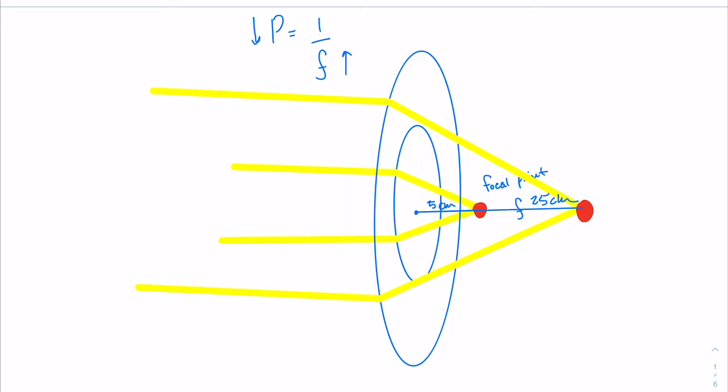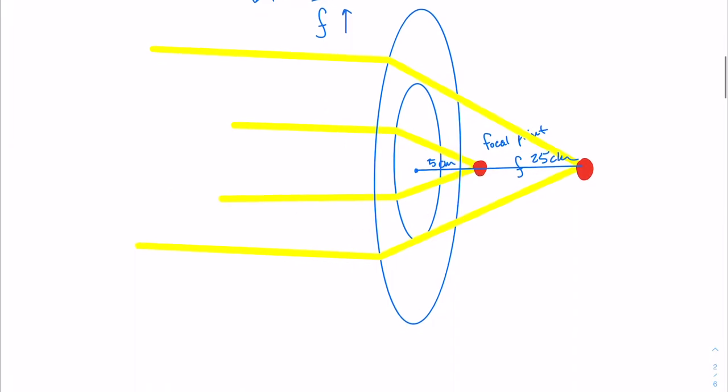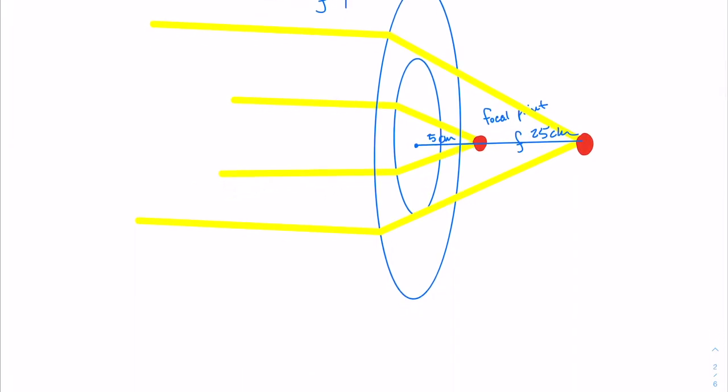Vice versa, if we plug in five centimeters — a smaller focal point — we'll get larger power. This means that if the lens can focus quicker, it's going to have a greater power. This makes sense because we want to focus things quickly. Sometimes we focus things at a distance, but oftentimes we don't have lots of space for experiments. So we want to focus that light in as small a space as possible, so we don't have to take up whole buildings for microscopes and telescopes and things like that.